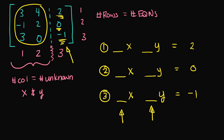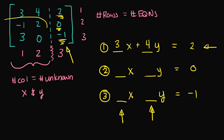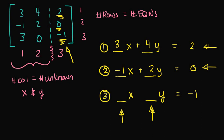For the first row, we have a 3 and a positive 4. So our first equation is 3x plus 4y is equal to 2. For our second equation, we have these coefficients: it's negative 1x plus 2y — we have a positive 2 — and that's equal to 0. And finally, if we look at the third row, that's going to correspond to the coefficients of the third equation. So, that's going to be 3x plus 0y is equal to negative 1.